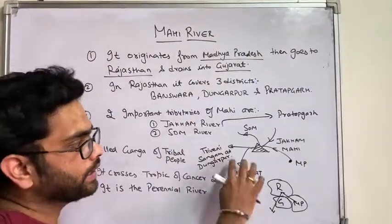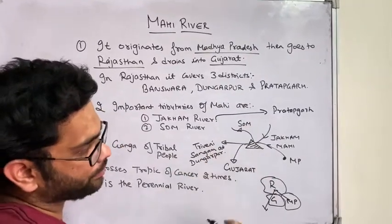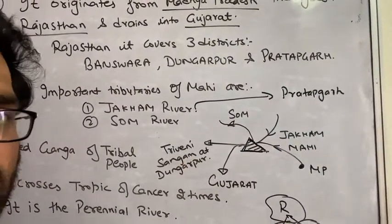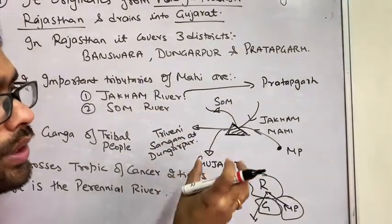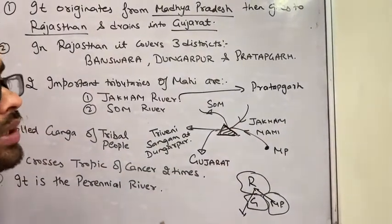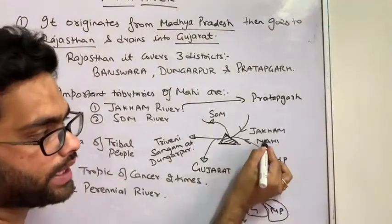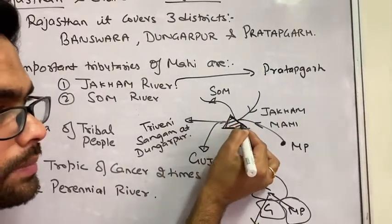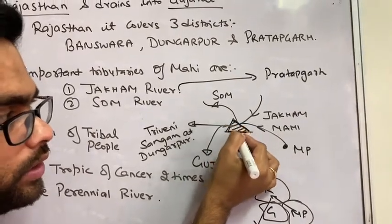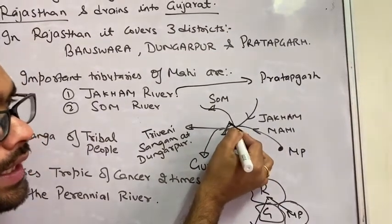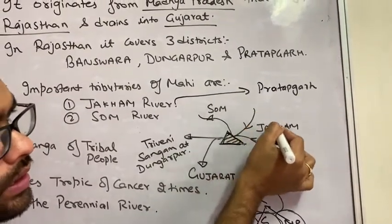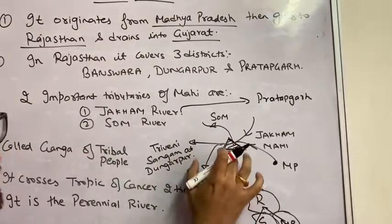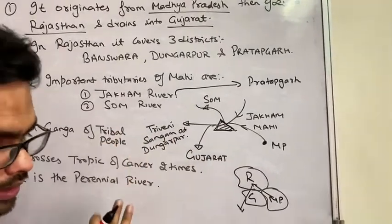Here is a mind map showing a place of Sangam — this is called Triveni Sangam, which means 3 rivers come and meet at one place. The 3 rivers are: the Mahi river, which originates from Madhya Pradesh and travels to Rajasthan; and in Dungarpur district, the Mahi meets the Jaakham river and the Som river. This is the place of Triveni Sangam at Dungarpur.